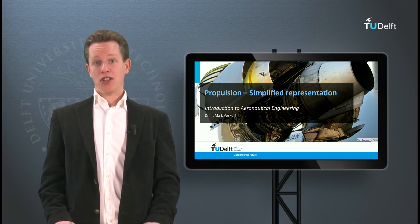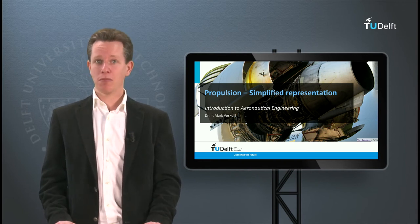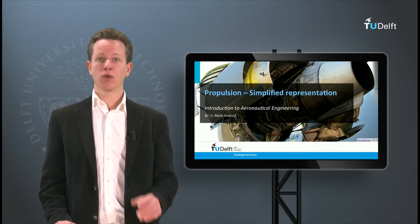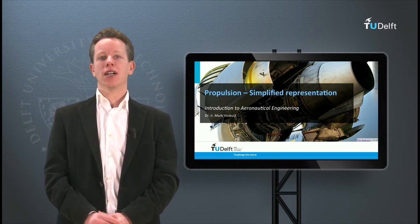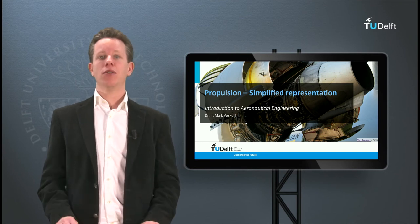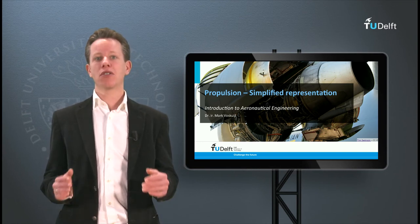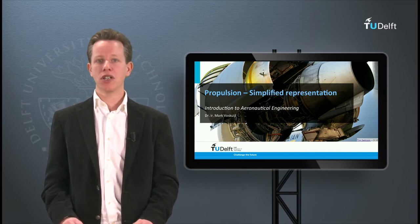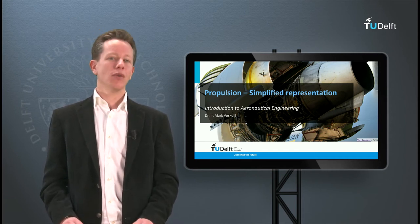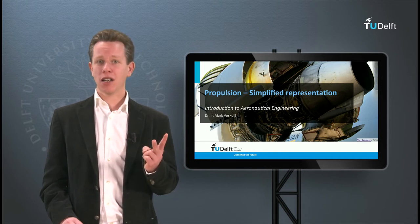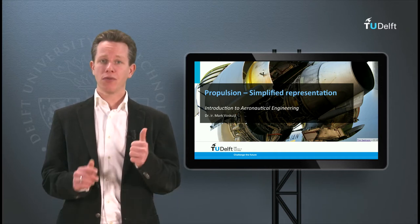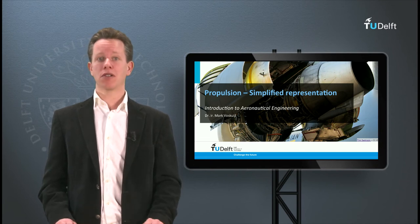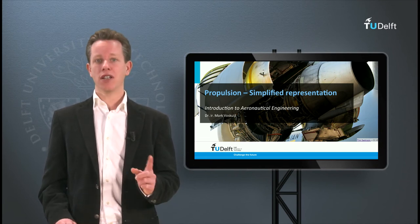Now we have derived all the essential equations concerning thrust, power and efficiency in the previous video, we can start to tackle our original problem. As explained in the previous video, it is my intention to express thrust as a function of airspeed in order to simplify the equations of motion. I will do this for two distinct types of propulsion systems: first, the pure jet engine, and second, variable pitch propellers. Let us start with the jet engine.